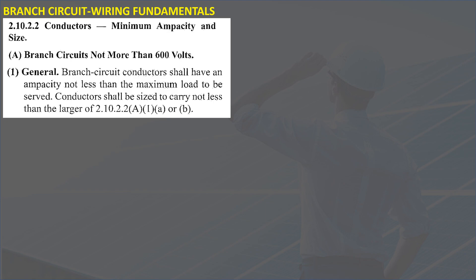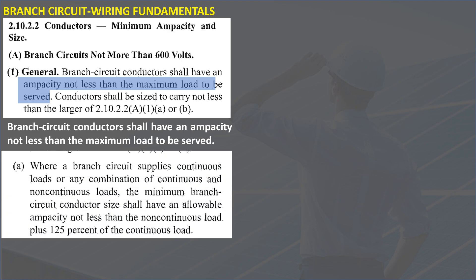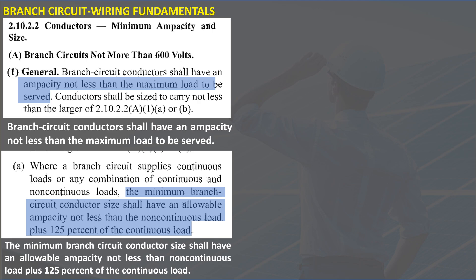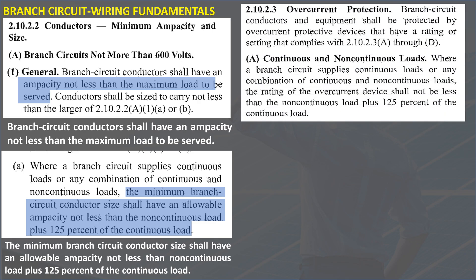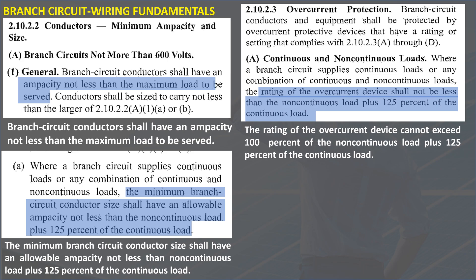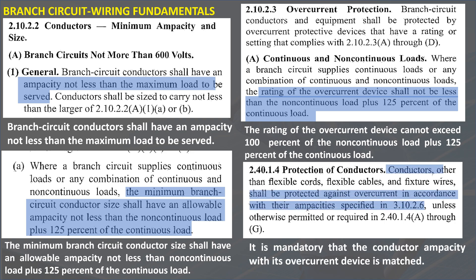What are the wiring fundamentals of branch circuits? In Section 2.10.2.2 A1A, branch circuit conductors shall have an ampacity not less than the maximum load to be served. The minimum branch circuit conductor size shall have an allowable ampacity not less than the non-continuous load plus 125% of the continuous load. The rating of the overcurrent device cannot exceed 100% of the non-continuous load plus 125% of the continuous load. And in Section 2.40.1 A1A, the conductor ampacity with its overcurrent device must be matched.